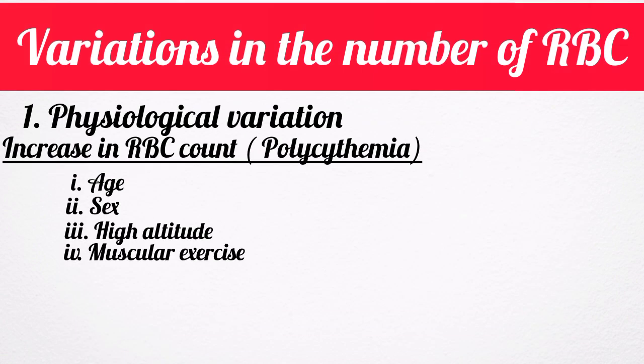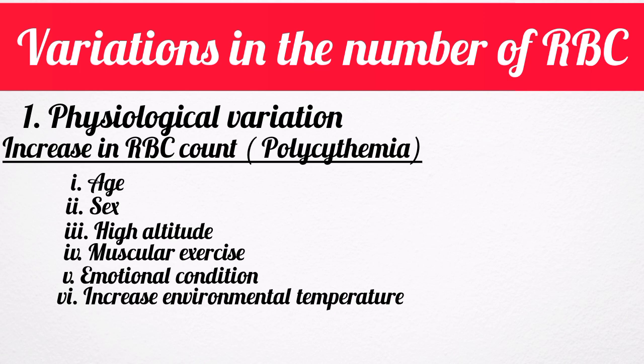Number four: muscular exercise. There is a temporary increase in red blood cell count after exercise. Number five is emotional condition — red blood cell count increases during emotional conditions such as anxiety. Number six is increased environmental temperature — an increase in atmospheric temperature increases red blood cell count. Number seven is after meals — there is a slight increase in red blood cell count after taking a meal.